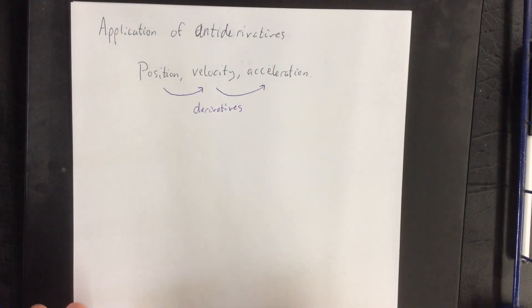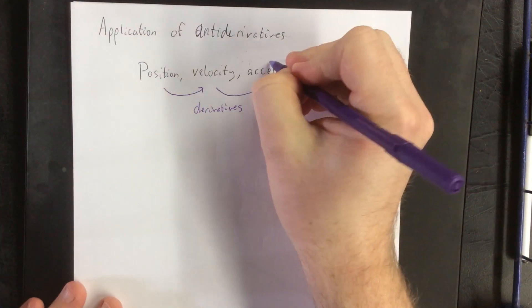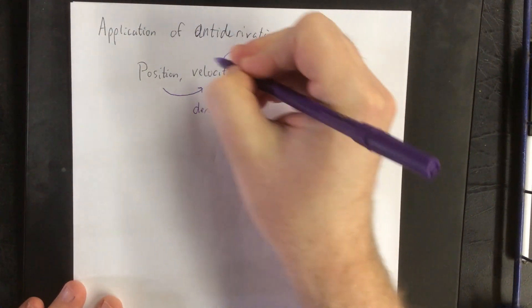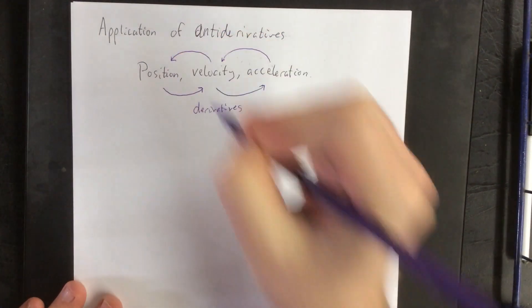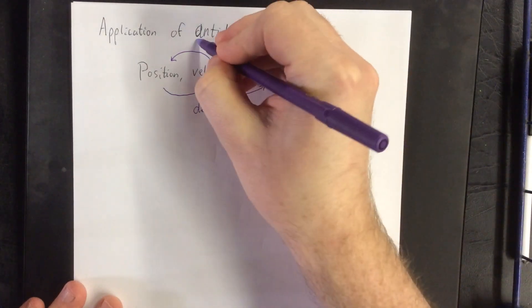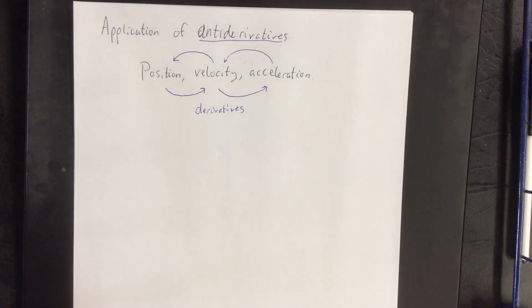So let's say for the sake of argument that you have an acceleration and you're interested in finding a velocity, or you have a velocity and you're interested in finding a position. In that case you would be applying anti-derivatives.